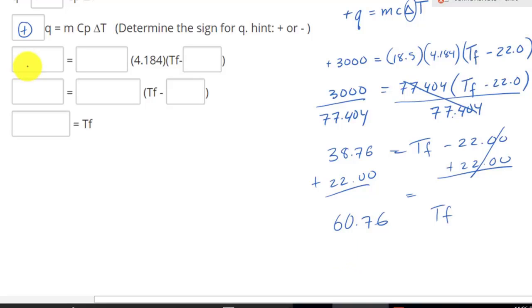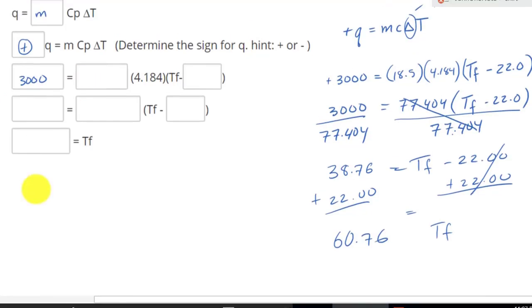So let's plug in our answers here. Well, in this case, what we have here is 3000. And what is missing here? Of course, your M. Well, what is your M in this case? It is 18.5. And what is this Tf minus? And 18.5 times 4.184. That's your C. And then we have multiply by Tf minus what? Well, Tf minus Ti, which in this case is 22.0.